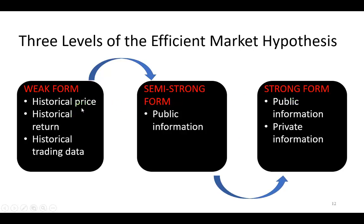Many studies conclude that, for the most part, markets are weak form efficient in that historical data are already reflected in the price of assets. Some have asserted that there is some indication that markets might be semi-strong form efficient, but not all studies agree. Strong form is a tough one to prove because every now and again we hear of insider information — which is private — and how some who do things a little bit illegally are able to utilize such private information to make a lot of money in the market.